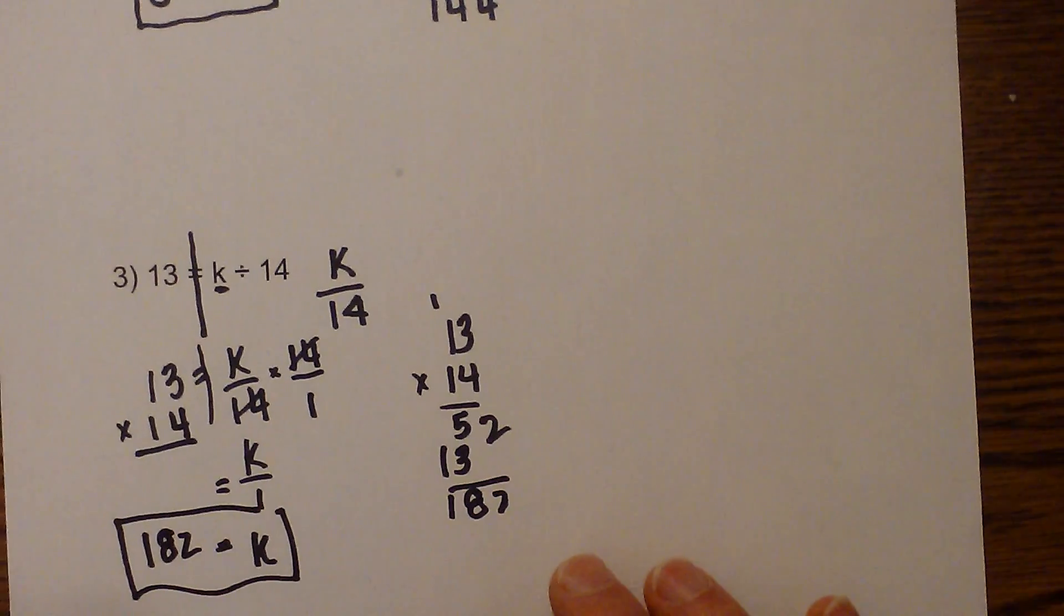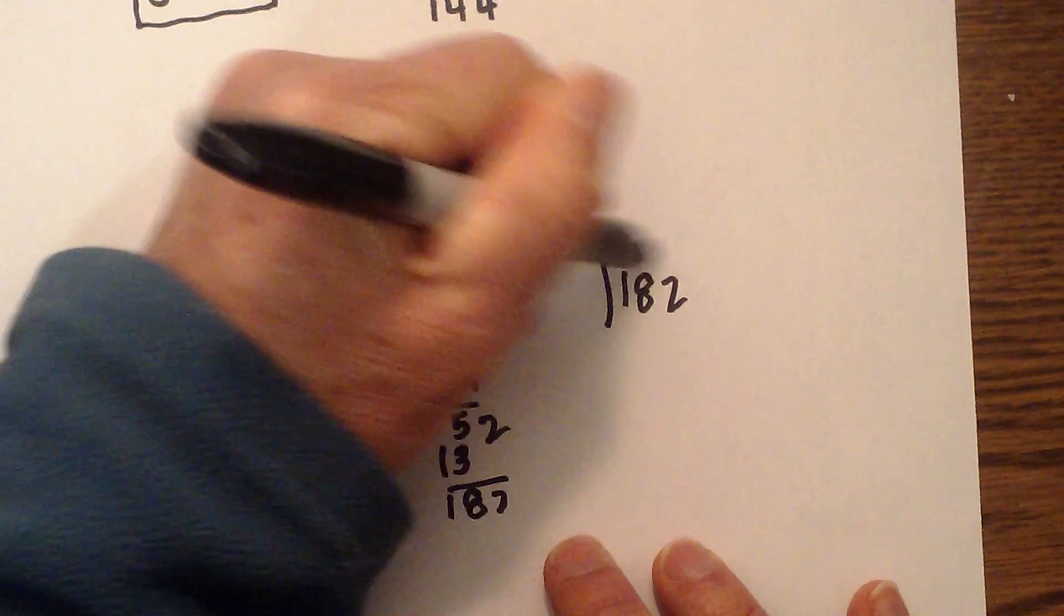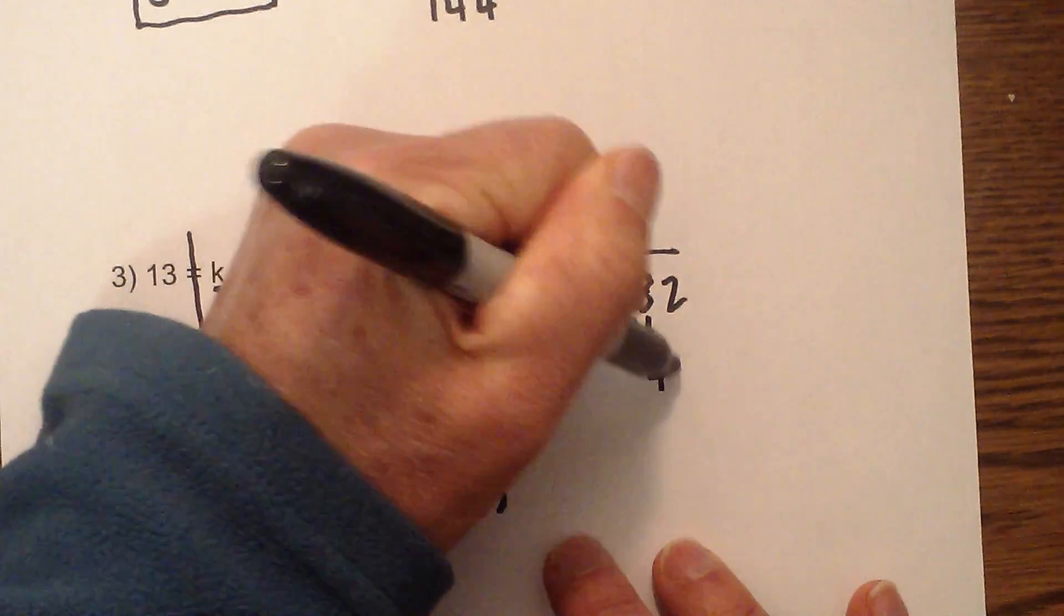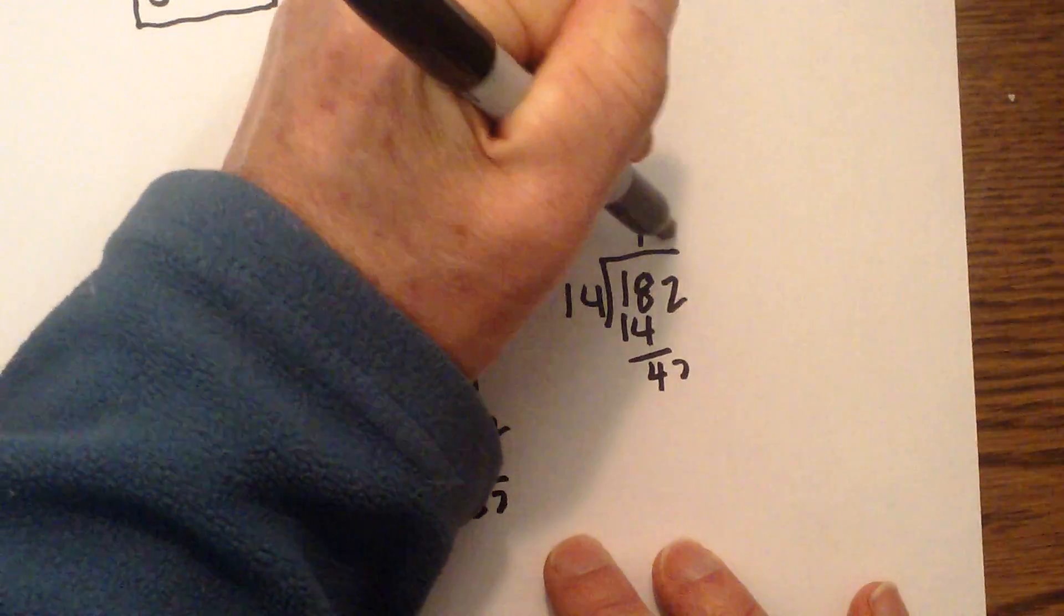Okay and then I can check the work. If you take 182 and divide it by 14 that is 1 and 4, 42, and that does indeed become 13.